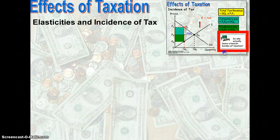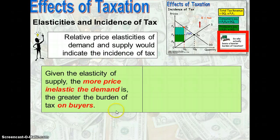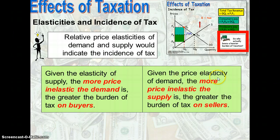The relative price elasticity of demand and supply would indicate the incidence of tax. Given the price elasticity of supply, the more price inelastic a demand curve is, the greater the burden of tax on the buyers, because they are less responsive to price changes. On the other hand, given the price elasticity of demand, the more price inelastic the supply is, the greater the burden on the sellers, because those sellers are less responsive to price changes.